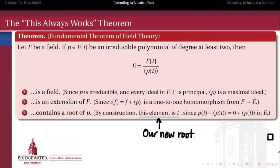So this is sometimes called the fundamental theorem of field theory, because it's the construction that we can always use to give us a root where there was no root before. For example, starting with a polynomial with rational coefficients all of whose roots are irrational, if we apply this construction we're guaranteed to get at least one root of that polynomial inside of our extended field.